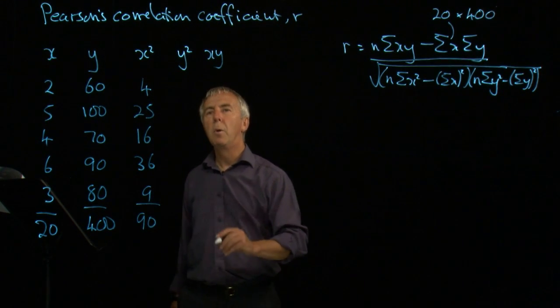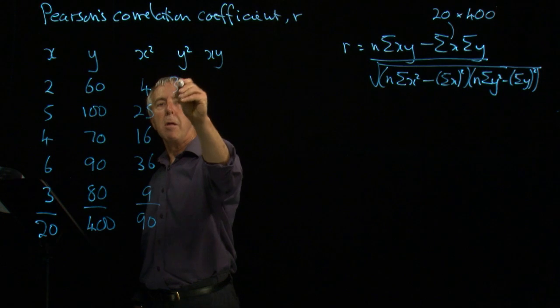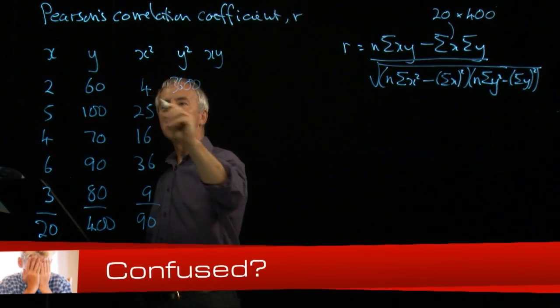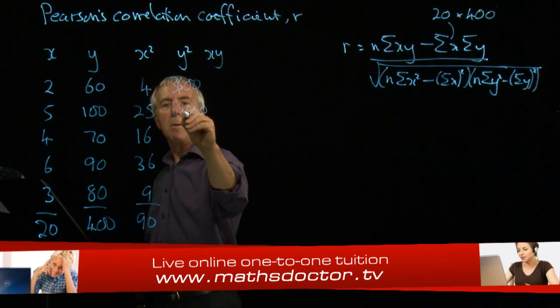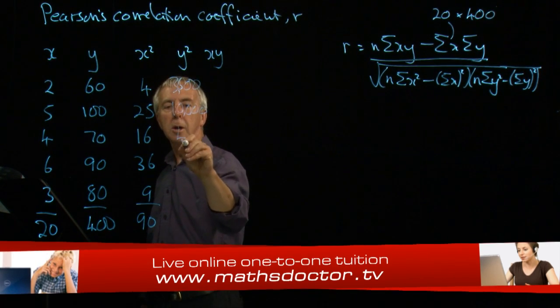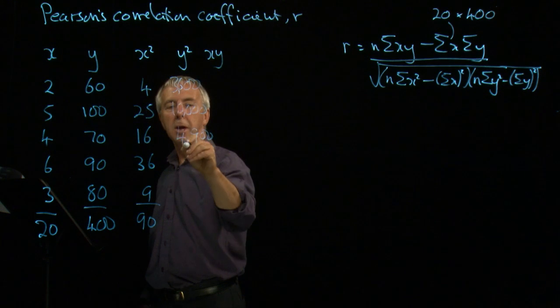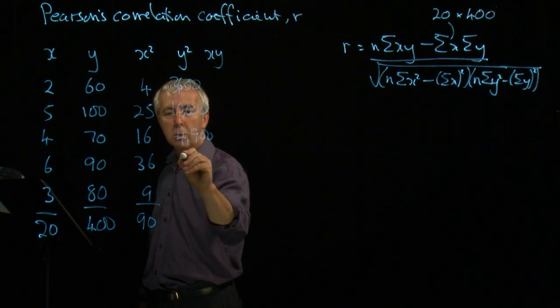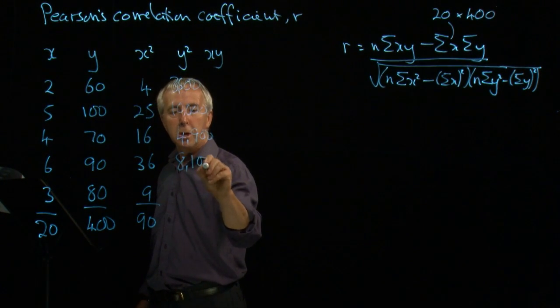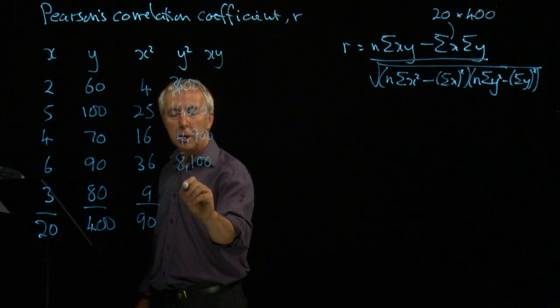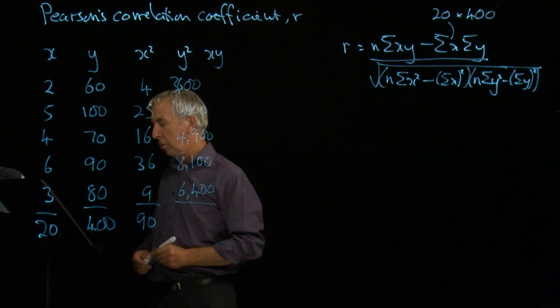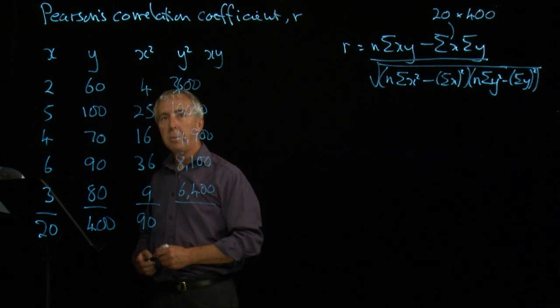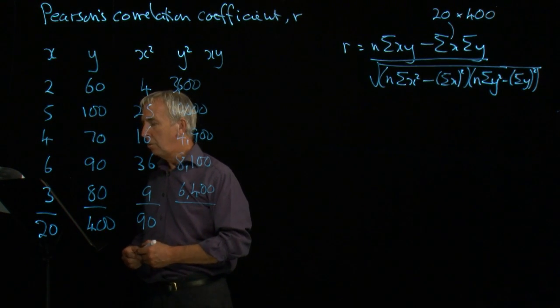Similarly for y squared, 3600, 60 squared, 100 squared is 10,000, 70 squared is 4,900, 90 squared is 8,100, and 80 squared is 6,400. And if we add those up, we get 33,000.